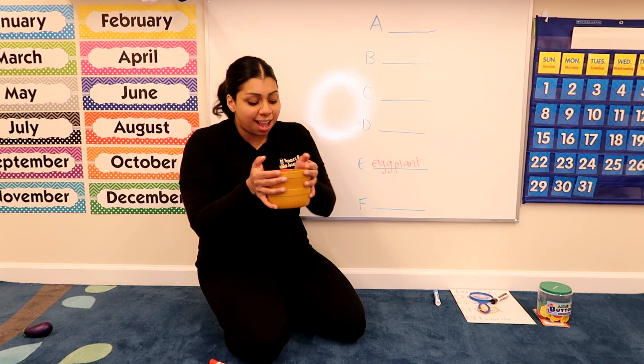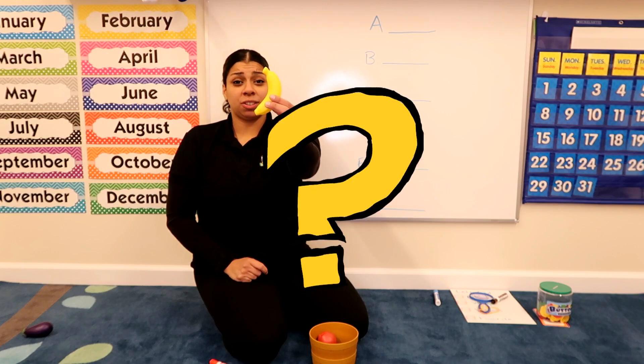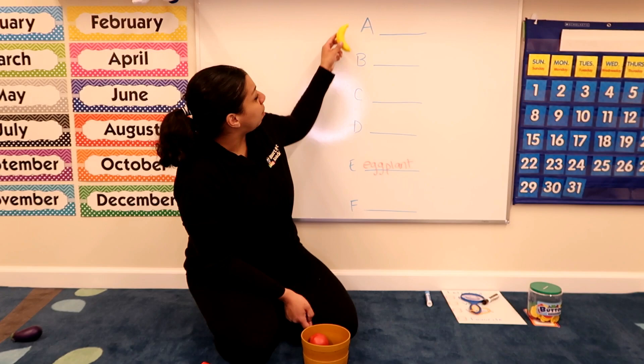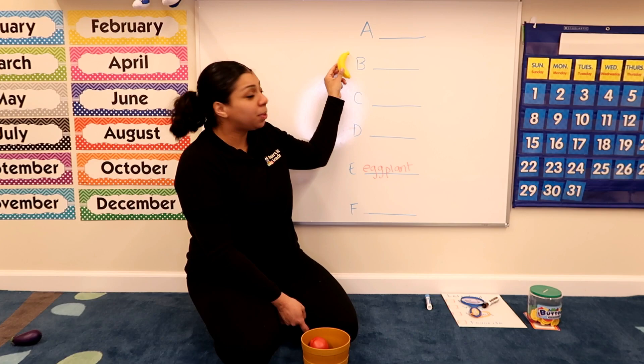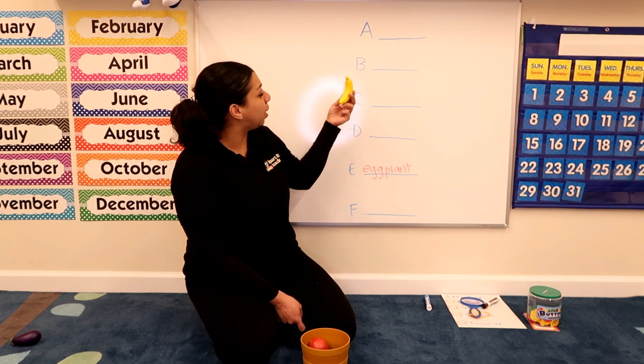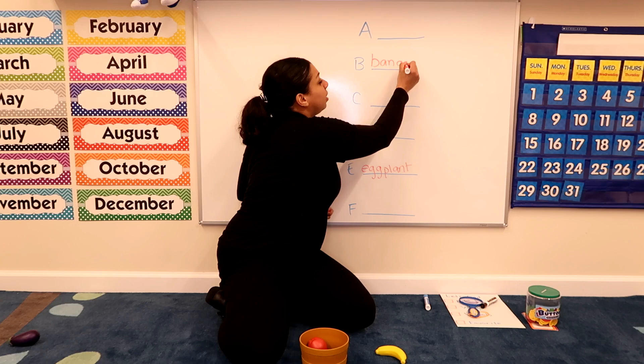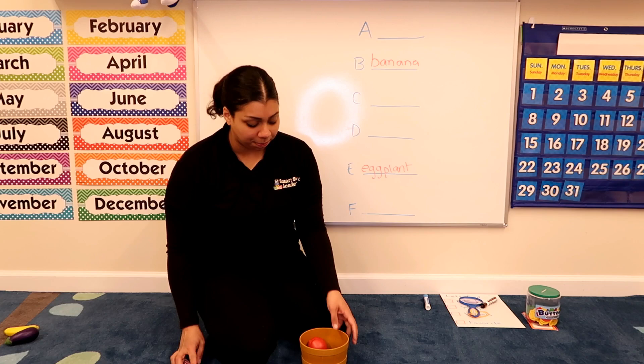All right, let's put that to the side. What's next? What's this? Do you guys know what this is? It is a banana. What letter does banana start with? Does it start with A? B, B, banana. No, it would sound like 'anana' and that's not banana. What about B? B, B, banana — that's what B starts with. Let's write it down. Banana.